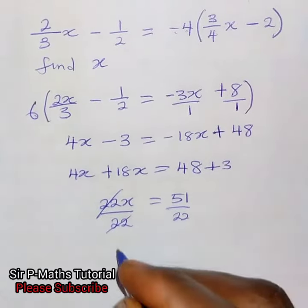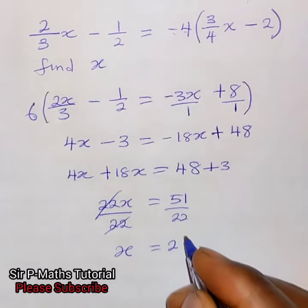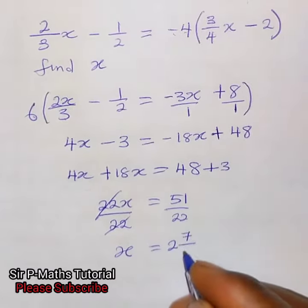This will cancel so that my x will be equal to, 22 is 2 times inside 51 remaining 7, so I'll have 2 and number 7 over 22.